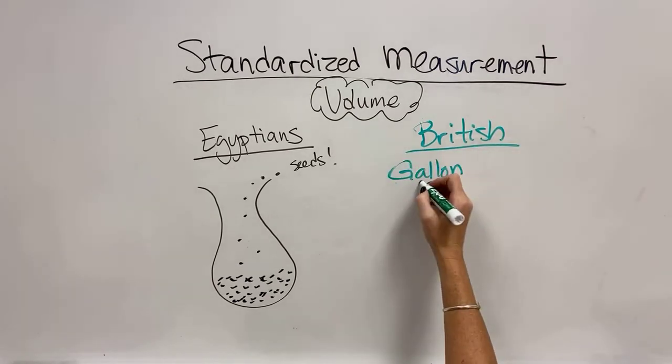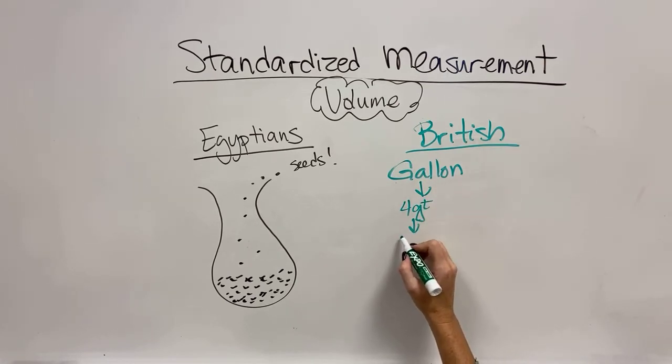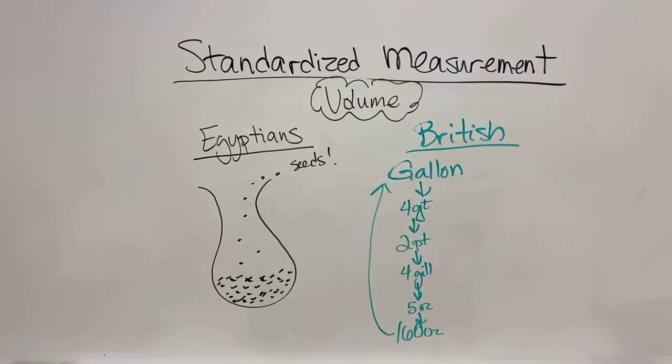The British then came along and said that they were going to have the gallon be their major metric. And a gallon will be further separated into four quarts. And a quart will be separated into pints. And a pint will be separated into four gills. And a gill will be separated into five ounces. So, there would be 160 ounces in a gallon.